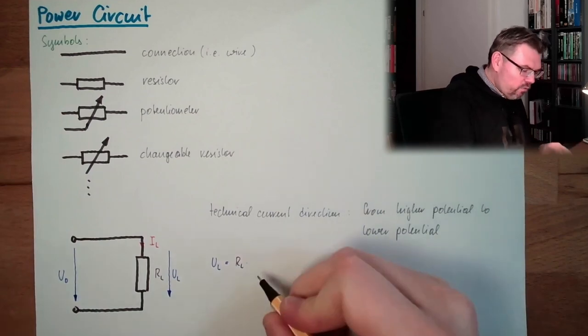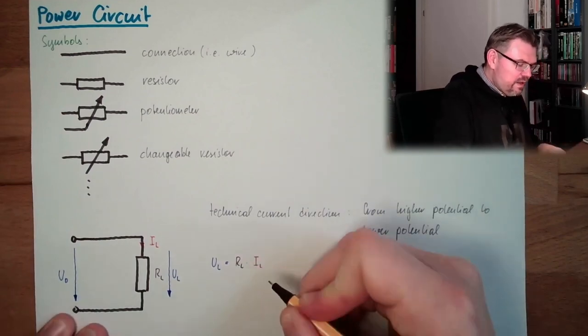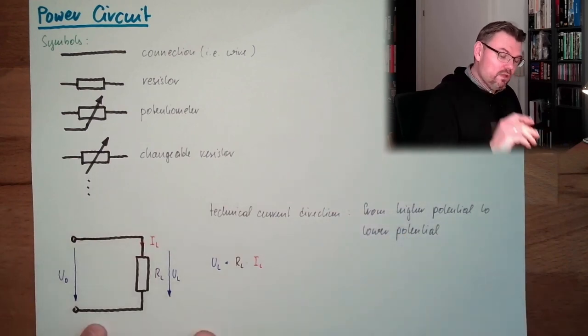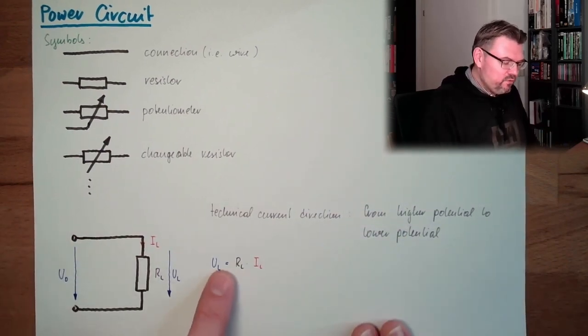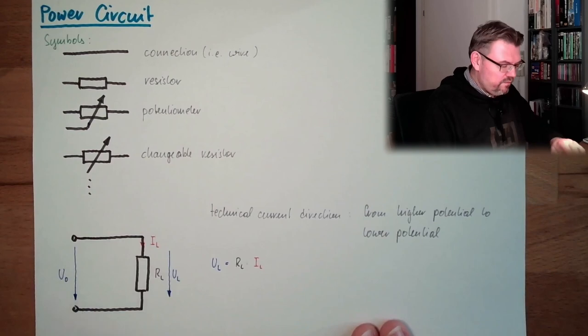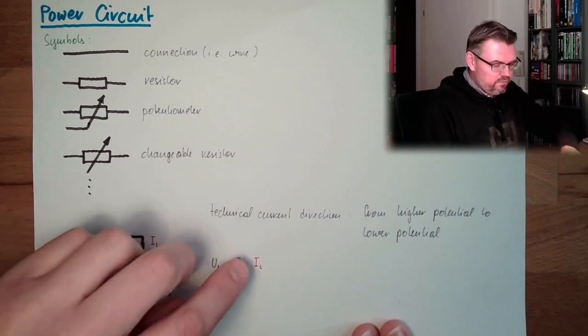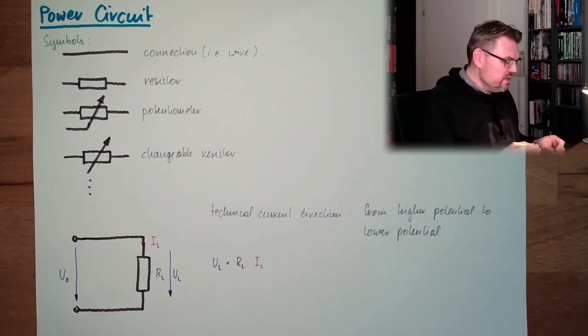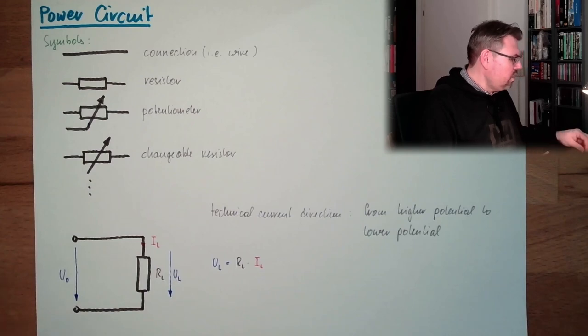And this does only apply if voltage and current are in the same direction. If they are not in the same direction, then I have to draw a minus. If I would turn UL, I could write minus UL. If I would turn IL, I would write minus multiplied by minus IL. So there is somewhere a minus inside. So my advice, just draw it in the same direction.